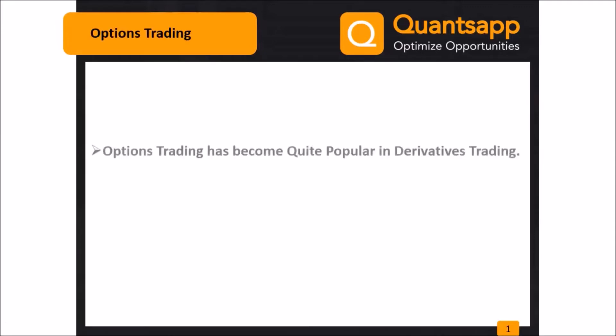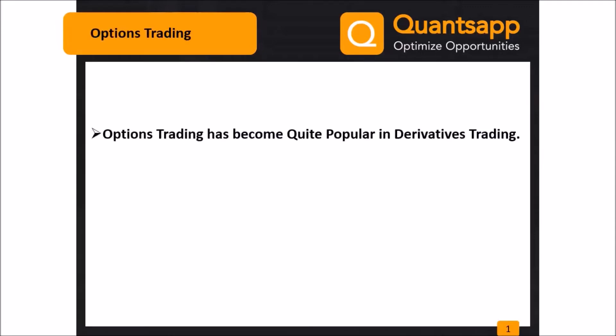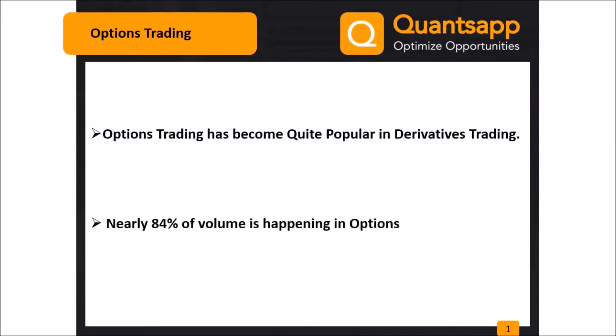Option trading has become quite popular in derivatives trading. Nearly 84% of the volume is happening through options.